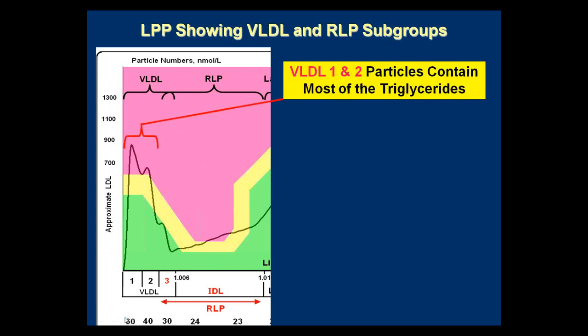Looking more closely at the profile: VLDL1 and VLDL2 (40-60 nanometers) are too big to penetrate the endothelial lining of your artery. However, VLDL3 is small enough and is part of RLP. One of the valuable things about our new reports is that you can clearly see LDL1, 2, and 3 individually — if all you see is 1 and 2, you may not need to worry as much about remnants and just want to lower triglycerides. The RLP section contains dysfunctional VLDL remnants that never became LDL or got stuck at the remnant lipoprotein stage — and remember, they don't have to be oxidized to be taken up by macrophage.